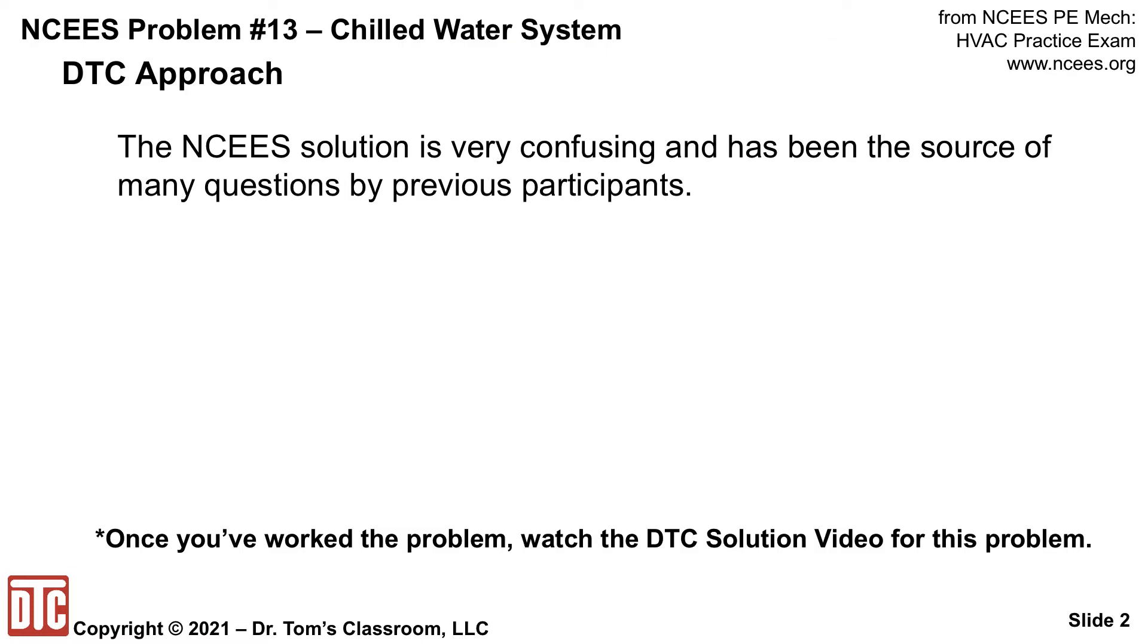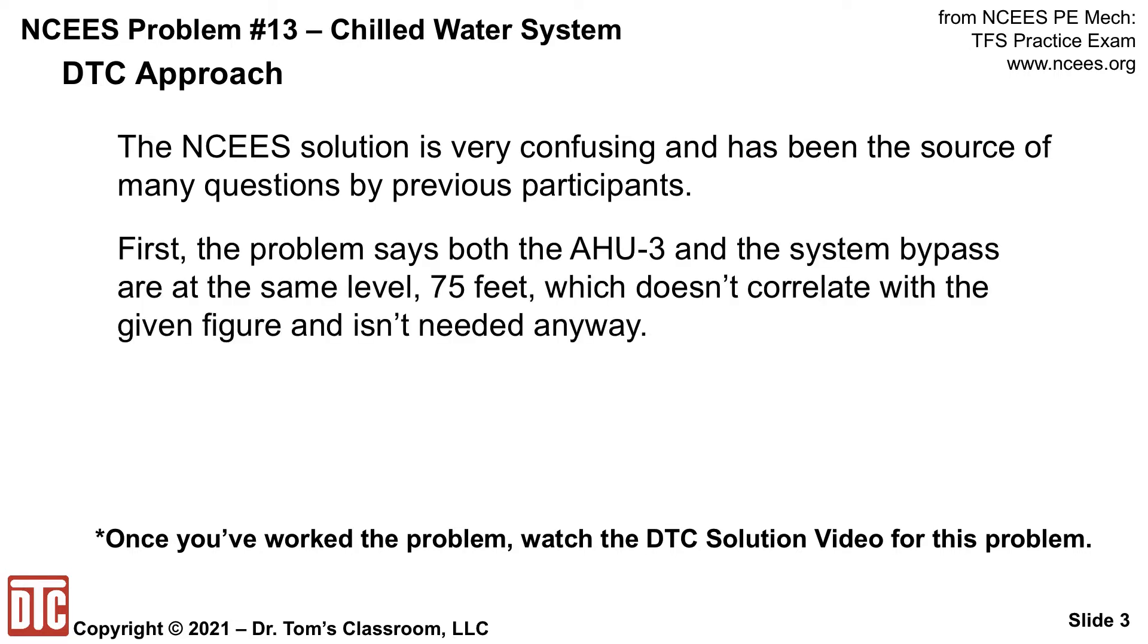Okay, the NCEES solution has always been confusing and a source of questions by many previous participants. The problem says that AHU-3 and the system bypass are at the same level, 75 feet, which doesn't correlate with the given figure, and the 75 feet isn't needed anyway, so that's an unnecessary confusion.